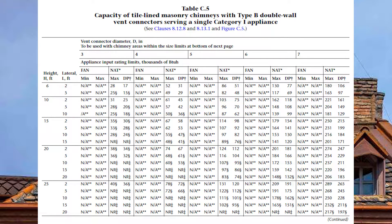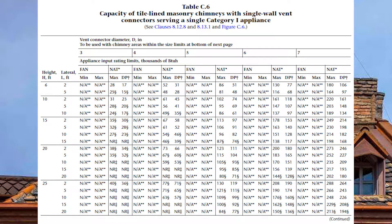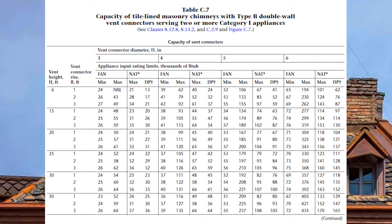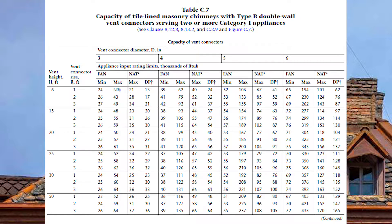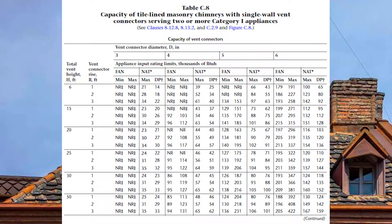The wording on Table C5 should look exactly like Table C1 from a previous video, except we are venting into a chimney. Turn to page 207 and you'll find Table C6 — same as C5 except with a single wall vent connector. Page 211 has Table C7: capacity of tile-lined masonry chimneys with Type B double wall vent connectors serving two or more Category 1 appliances, comparable to Table C3. Page 215 has Table C8, same as C7 but with a single wall vent connector, comparable to Table C4.